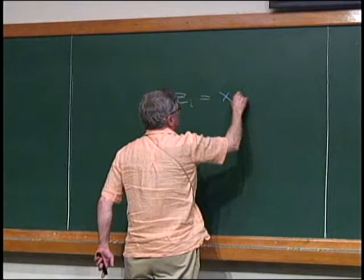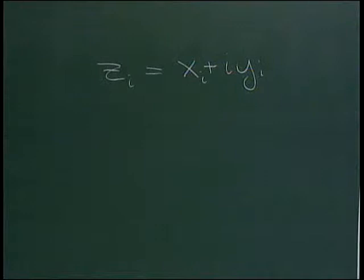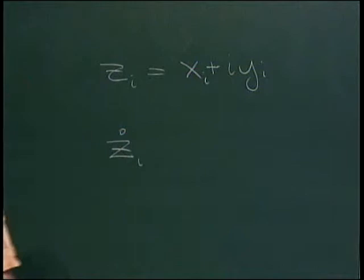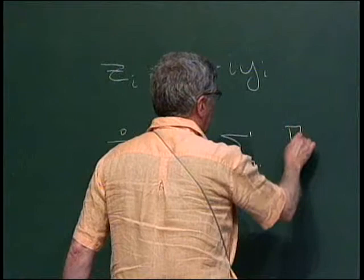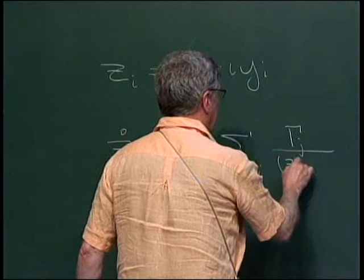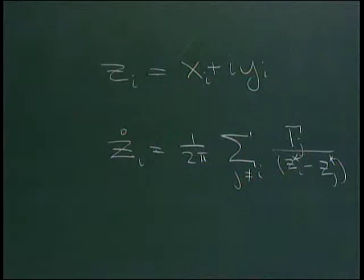It turns out it's also very convenient to write these equations in terms of the complex variable z, which is x plus i y, and then z_i dot is just 1 upon 2π times the sum over j not equal to i of gamma_j over the complex conjugate of z_i minus z_j. That's probably true up to at least a sign.